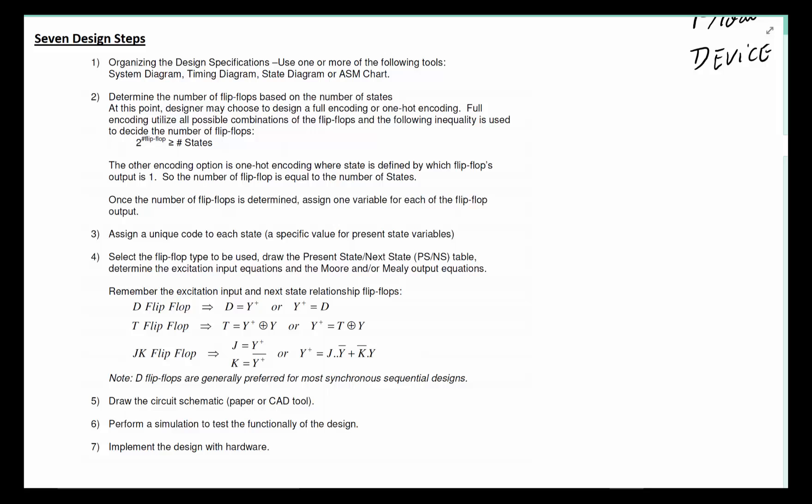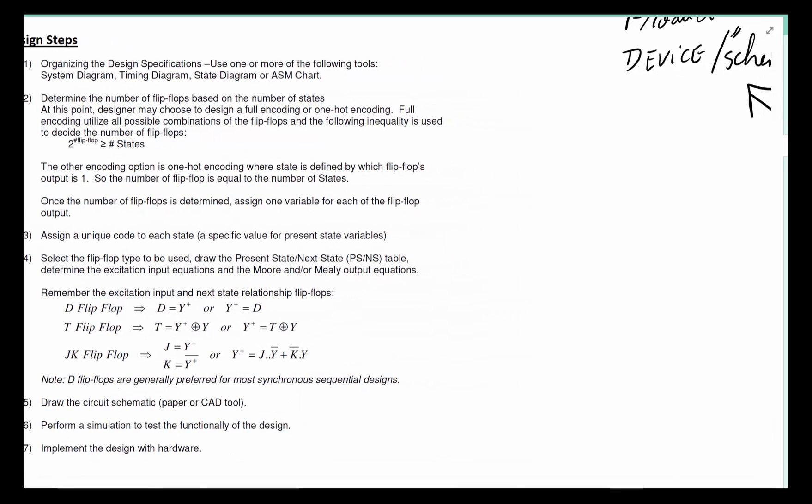It could be a shift register, a binary counter, a lock mechanism, a traffic light controller, a vending machine, or whatever. They give it to you in words. The first thing you want to do is reduce those descriptions to a concrete logical process where there's no ambiguity left.